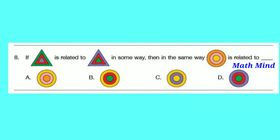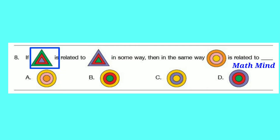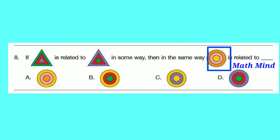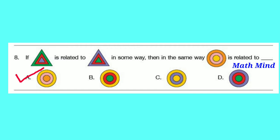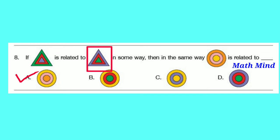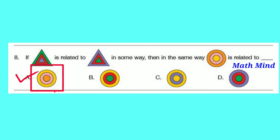Question number 8: If picture 1 is related to picture 2 in some way, then in the same way, the third picture is related to which option? These are two concentric triangles. The outer triangle is green in the first, whereas the inner triangle is green in the second. In similar pattern, for the concentric circles, the color of the outer circle is orange. In option A, the inner circle is orange, so option A is correct. Also, the color of the inner circle is yellow, and in option A, the outer circle is yellow.